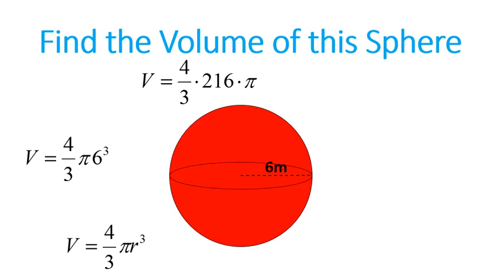Four thirds times 216 gives us 288 pi cubic meters. Now that's the exact volume. Our approximate volume is 288 times 3.14, which will give us 904.32 cubic meters as our approximate volume.